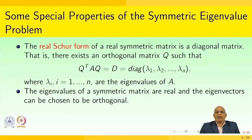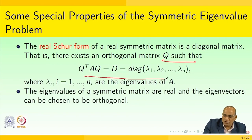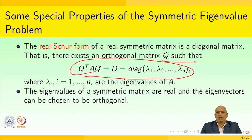Now let us see what are some special properties of the symmetric eigenvalue problem. The real Schur form of a real symmetric matrix is a diagonal matrix. That is, there is an orthogonal matrix Q such that Q transpose AQ equals the diagonal of lambda 1, lambda 2, lambda 3, ..., lambda n, where lambda i for i equal to 1 to n are the eigenvalues of the coefficient matrix A.